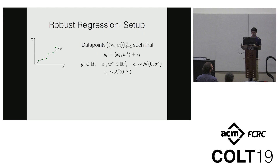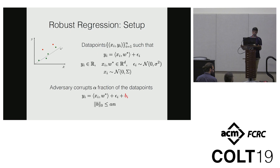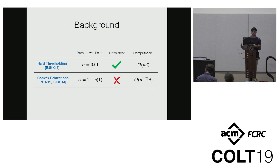Let me talk about this estimator, which we call AdaCRR. This is roughly an alternating minimization technique. In each iteration there are two key steps. The first is the adaptive hard thresholding step, where we try to identify the set of uncorrupted points in the training data. The second is the OLS step, where we compute the ordinary least squares estimate on the set of uncorrupted points identified by the first step.